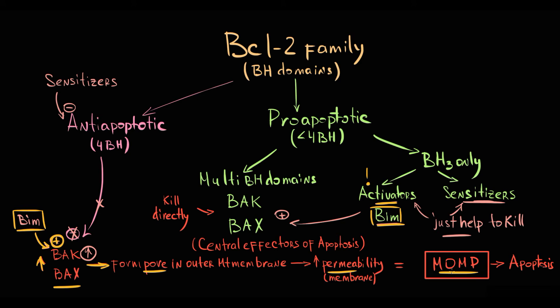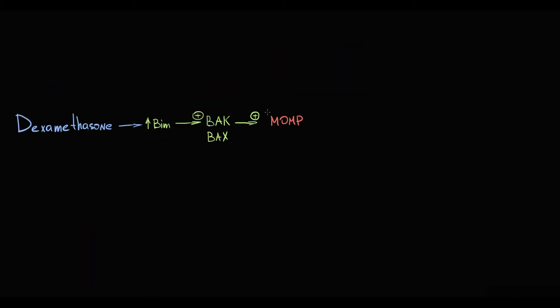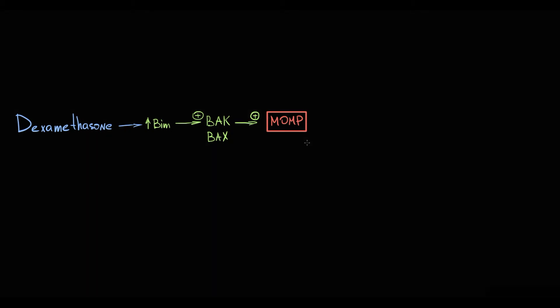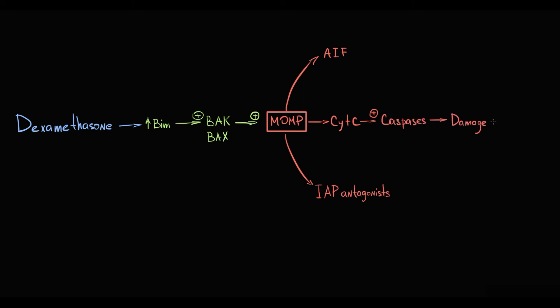Mitochondrial outer membrane permeabilization is the central and most crucial event in the intrinsic apoptotic pathway. With the extreme increase in permeability of the outer mitochondrial membrane, the content from the mitochondrial intermembrane space is released into the cytosol — primarily cytochrome C, apoptosis-inducing factors, and inhibitors of apoptosis protein antagonists. The major player here is cytochrome C, which induces activation of caspases, and caspases cause severe structural damage to the lymphocyte, leading to lymphocyte death.